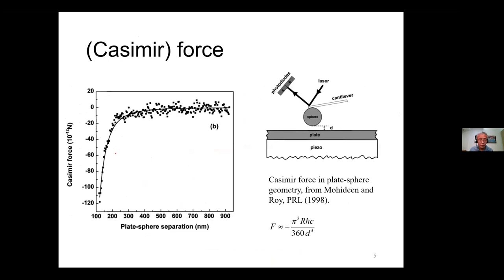Now let's look at another effect related to my talk: the Casimir force. Not only can heat transfer between bodies, there is also a force. In one famous experiment, you have a plate and a sphere — I think a metal-coated metal — and you can measure the force down to a rather small picoNewton scale. The measured values actually fit the theory, shown as a solid line.